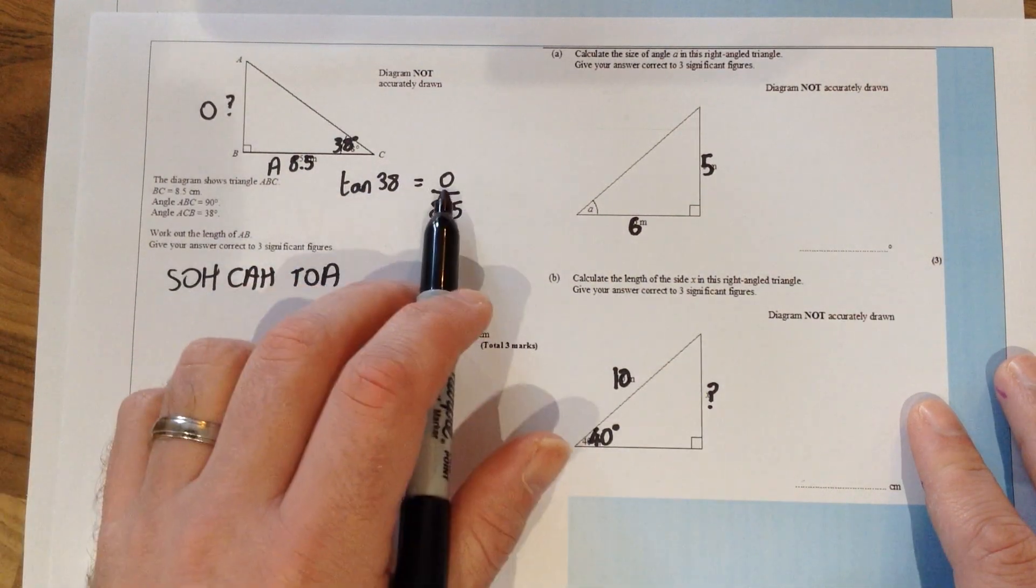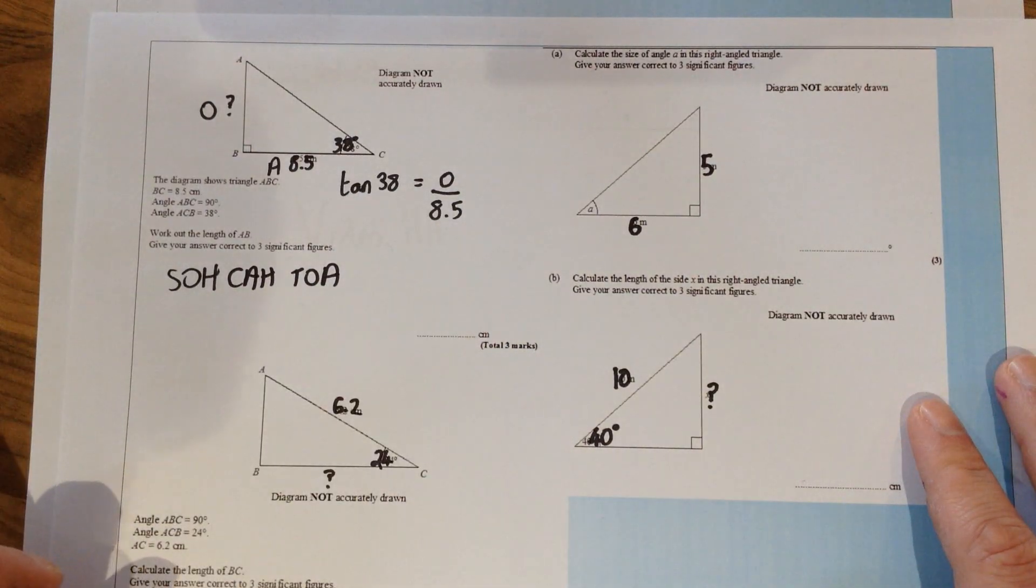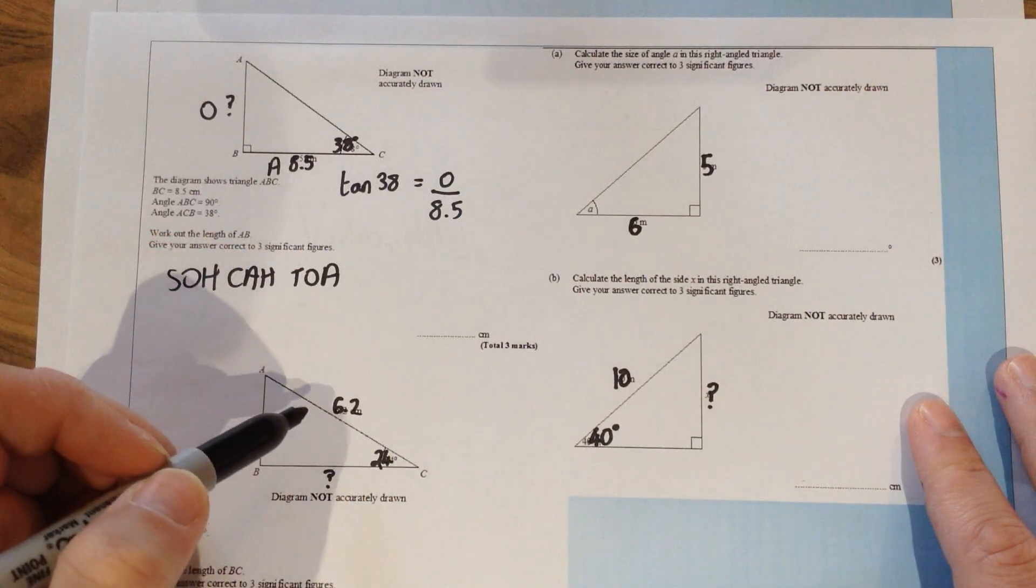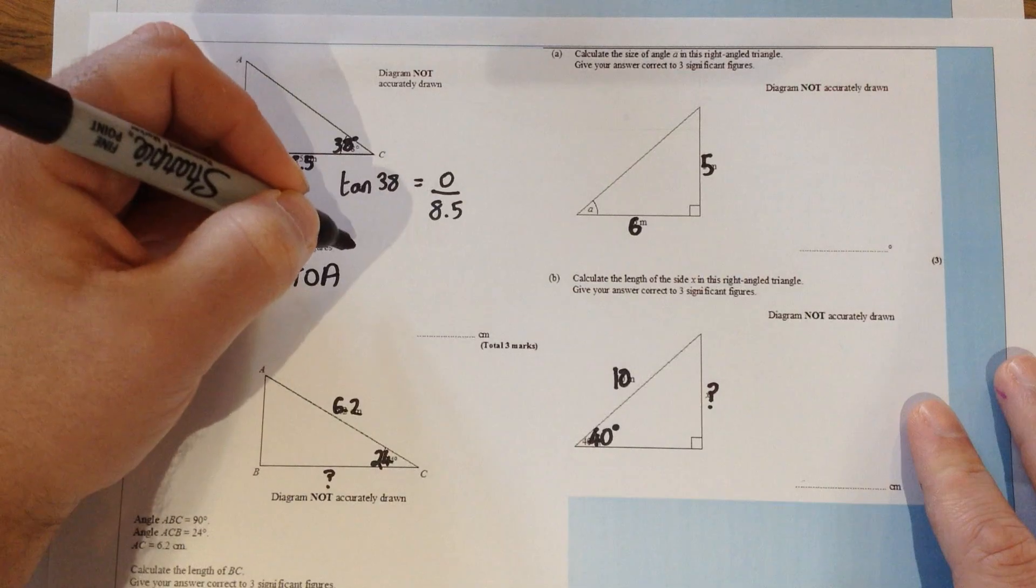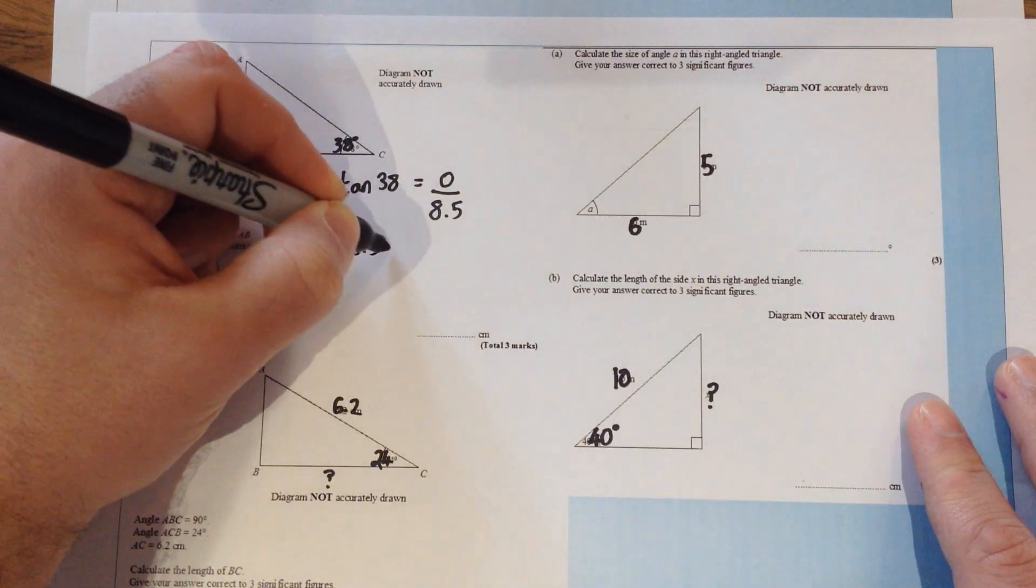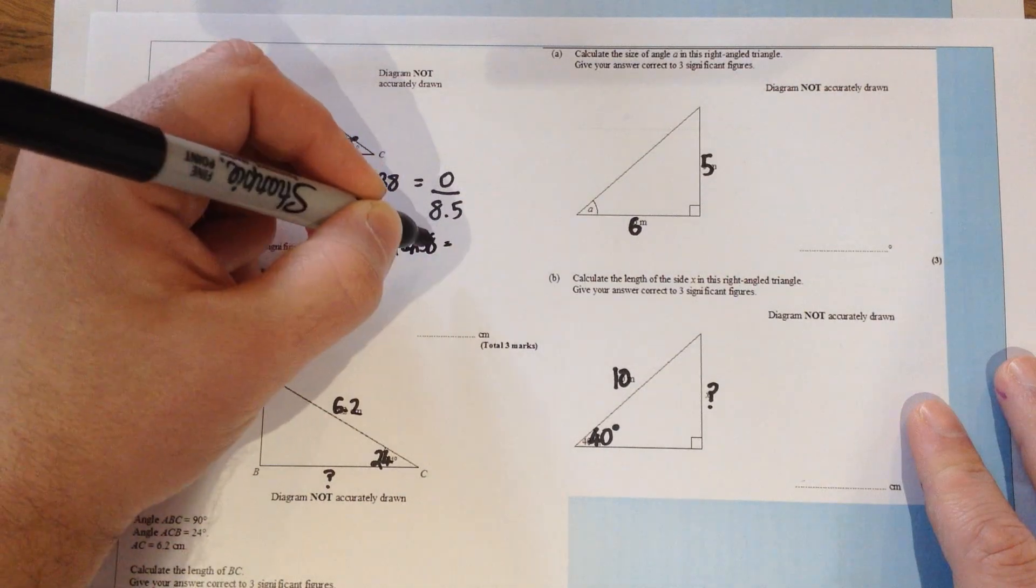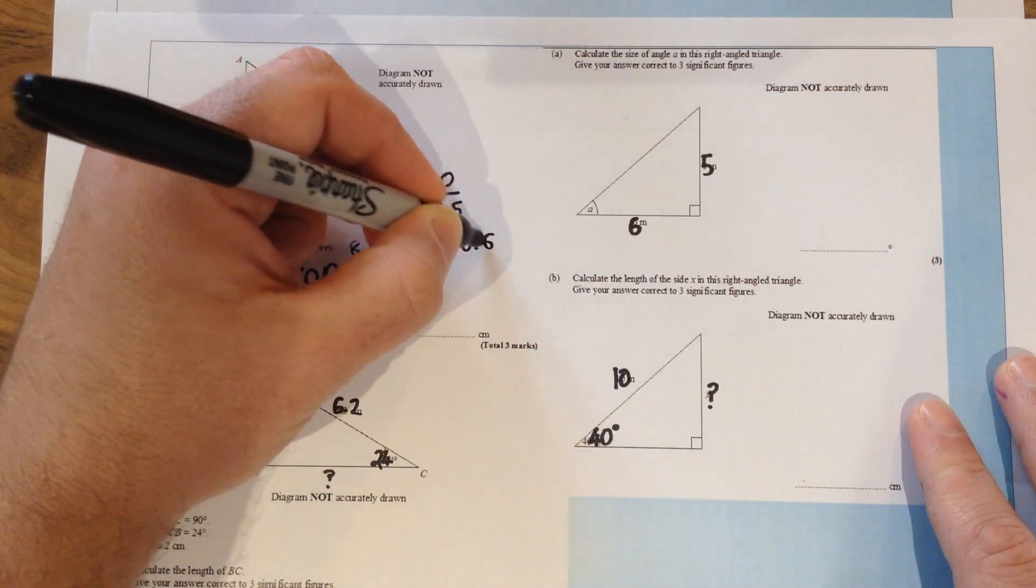We now need to rearrange this to try and get the opposite side on its own to basically make that the subject. So we would need to times by 8.5 because that's the opposite of divide by 8.5. So if we times by 8.5 we get 8.5 times tan 38 which if you put into your calculator is 6.64.